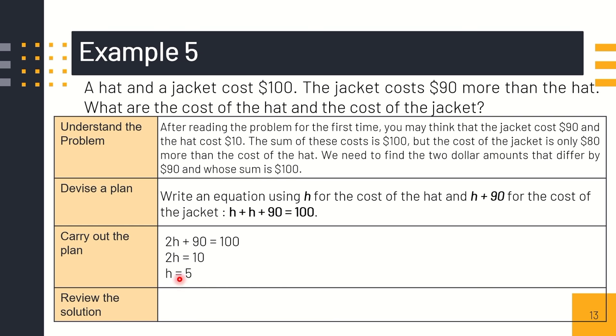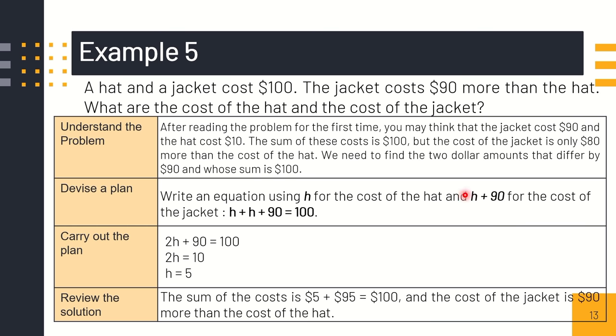What is our H? That is the cost of the hat. Therefore, the price of the hat is $5. And our H plus 90, if we substitute, that is 5 plus 90, which is 95. So the cost of the jacket is $95. And when we check, the price of the jacket, $95, is $90 more than the hat.